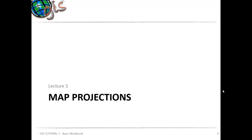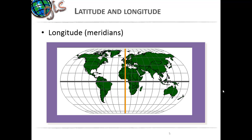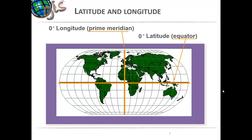Before we talk about map projections, let's talk about basic latitude and longitude. Longitude is essentially meridians. When you look at the earth — the spheroid — all the vertical lines are called meridians. These are non-parallel lines because of the shape of the earth. And then there are latitudes, which are essentially parallels. The prime meridian is zero degrees longitude, and zero degrees latitude is called the equator.